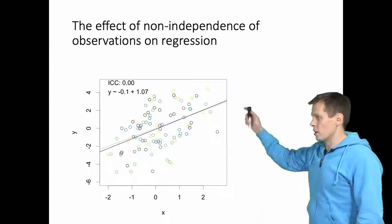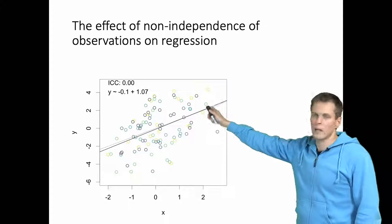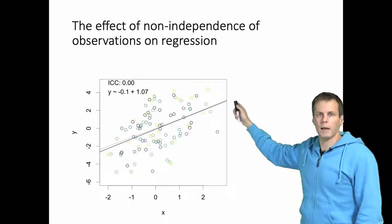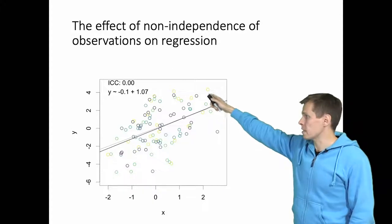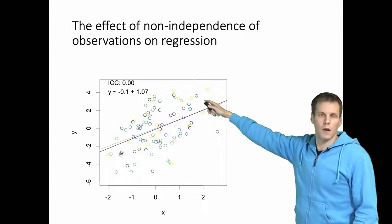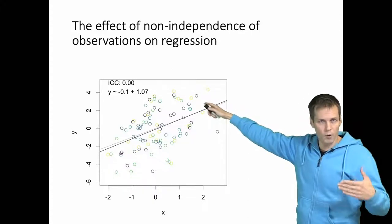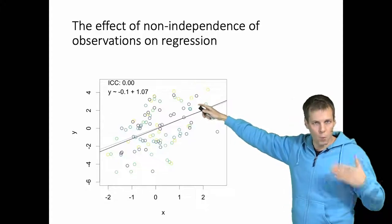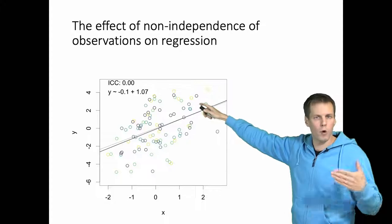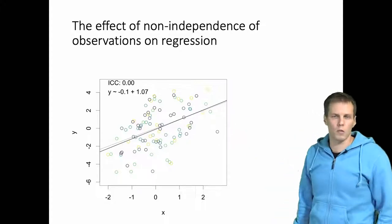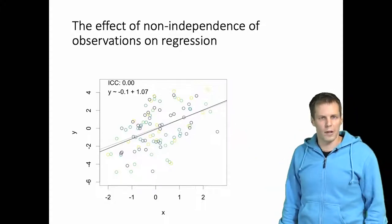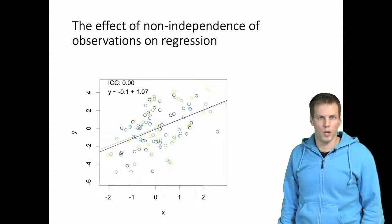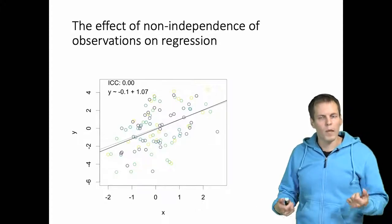Initially, the intraclass correlation is zero, so all observations are independent — there is no particular pattern in the colors — and our regression estimates are quite precise. The actual intercept is zero and our estimate is 0.1. The actual slope is 1 and our estimate is 1.07, so it's pretty close. That's what you can expect from 100 observations with one explanatory variable.